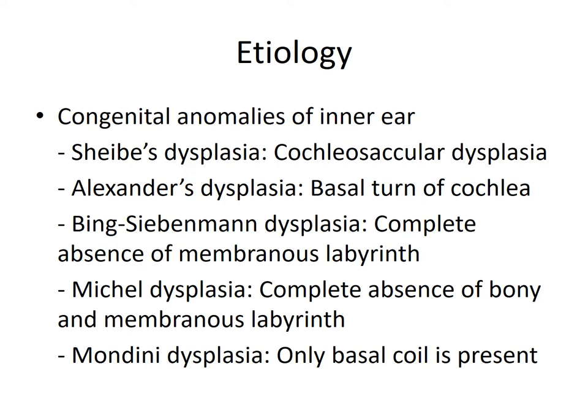The etiology of sensorineural hearing loss can be broadly divided into congenital and acquired causes. In congenital, there can be three categories: congenital anomalies of the inner ear, prenatal factors, or perinatal factors which are responsible for the development of sensorineural hearing loss.